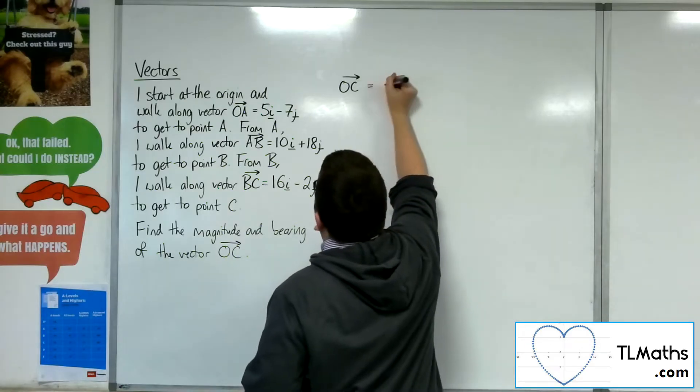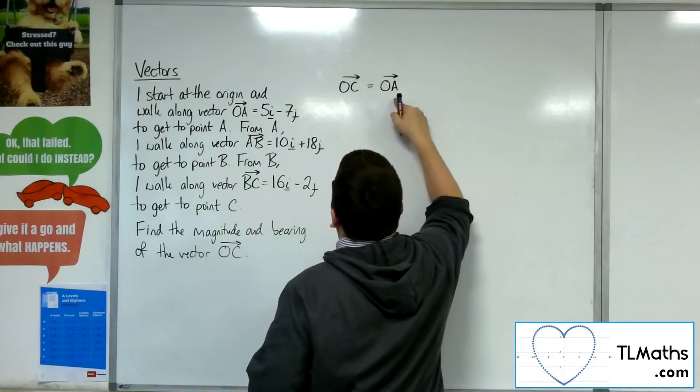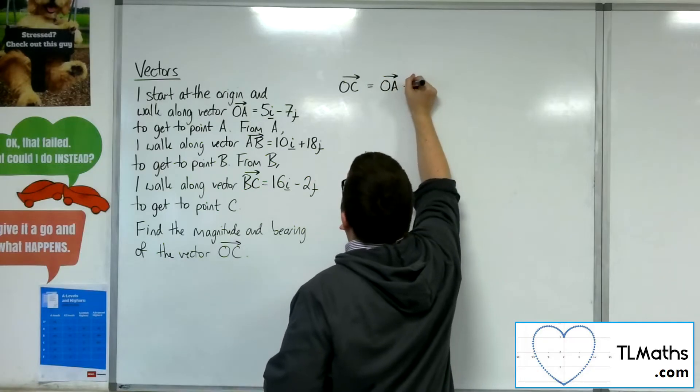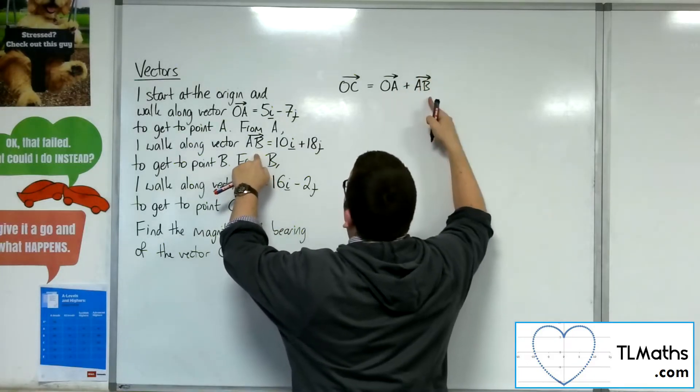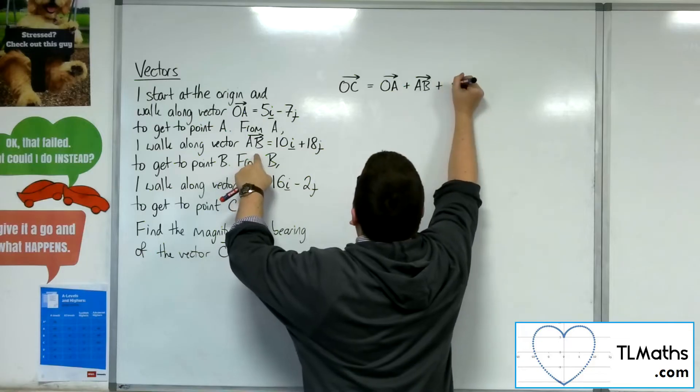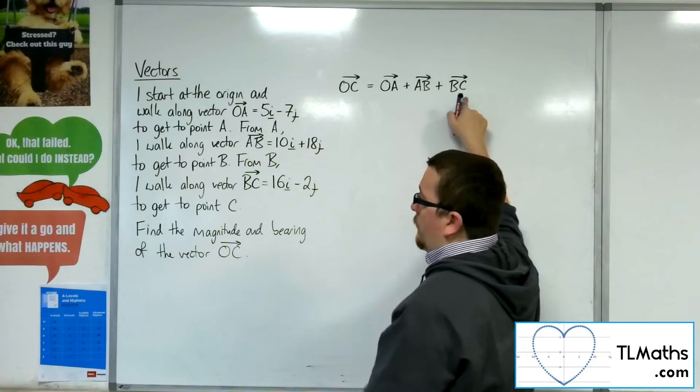And that would be OA, so that gets me from the origin to A. Then I travel along AB, so that gets me from the origin to B.